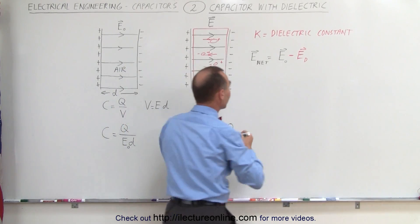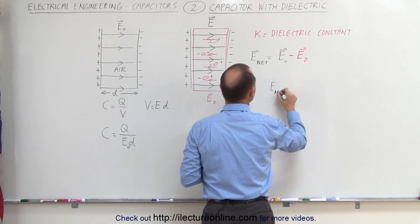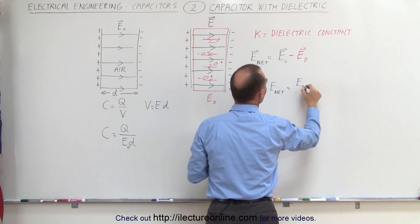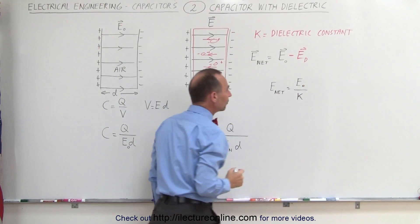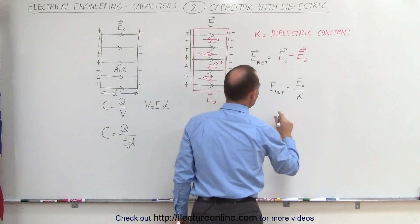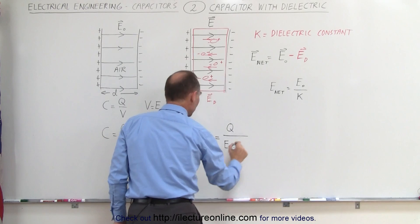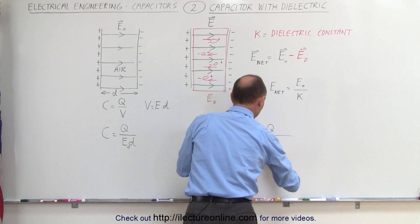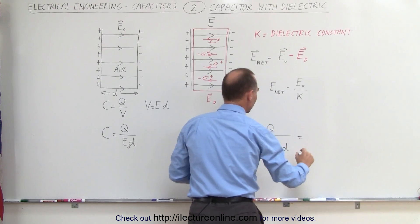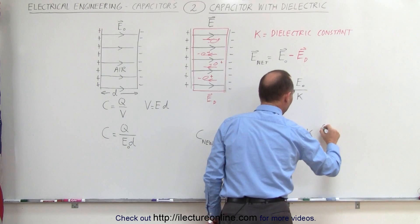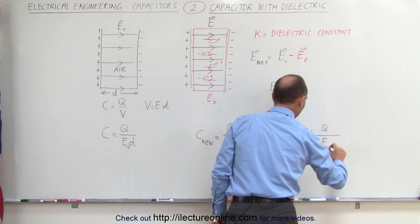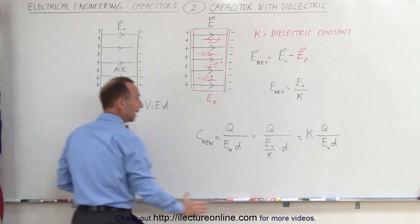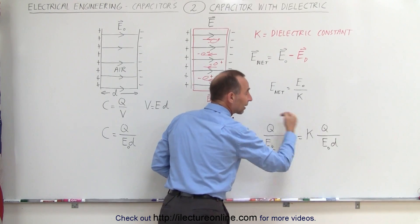How much larger? Well, it turns out that the net electric field is going to be equal to the original electric field divided by the dielectric constant K. So the new capacitance is equal to the charge on the plates divided by E sub not divided by K times D, which means the new capacitance equals K times Q over the original electric field strength times the distance between the plates. The only difference between this equation and the original is this additional dielectric constant K.